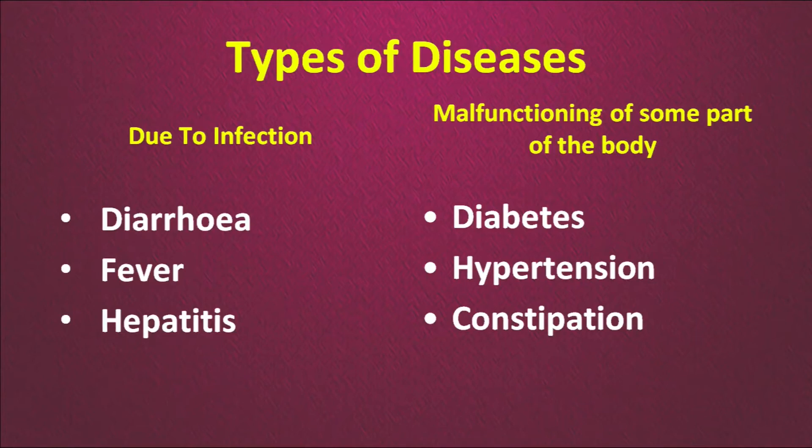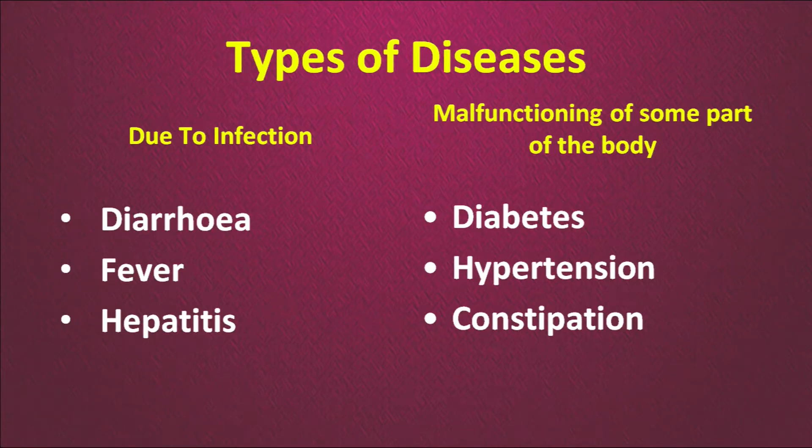Now we will talk about different types of changes in different types of diseases. We will focus on certain diseases: during infection we have selected diarrhea, fever and hepatitis; and for body malfunctioning we have selected diabetes, hypertension and constipation. Let us see in each case what we can do.